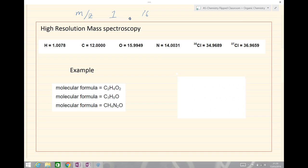High resolution mass spectroscopy, however, comes out with a more precise value for each of the atomic masses. So the precision goes down to 4 decimal places in this example.